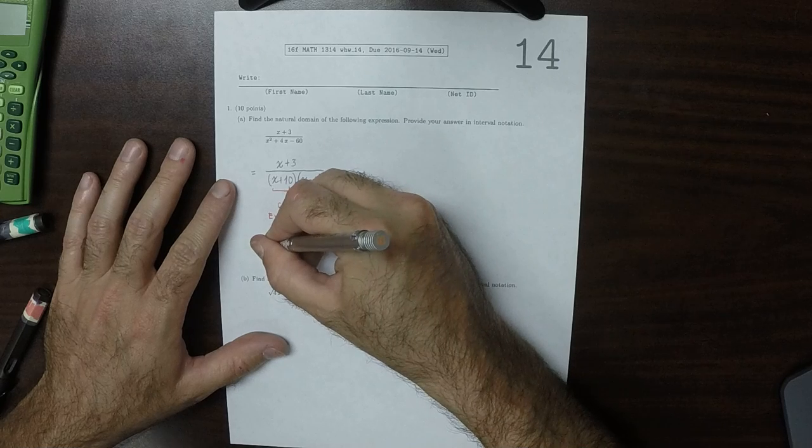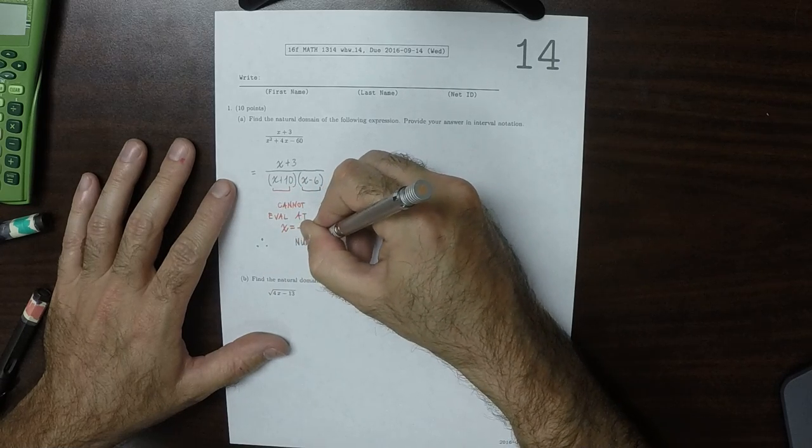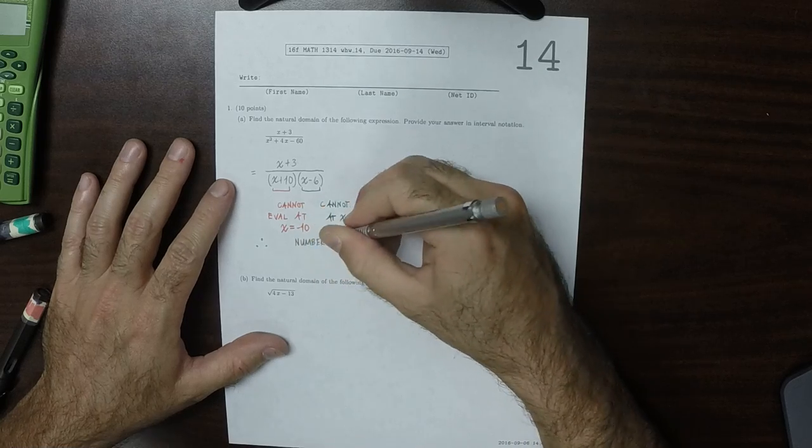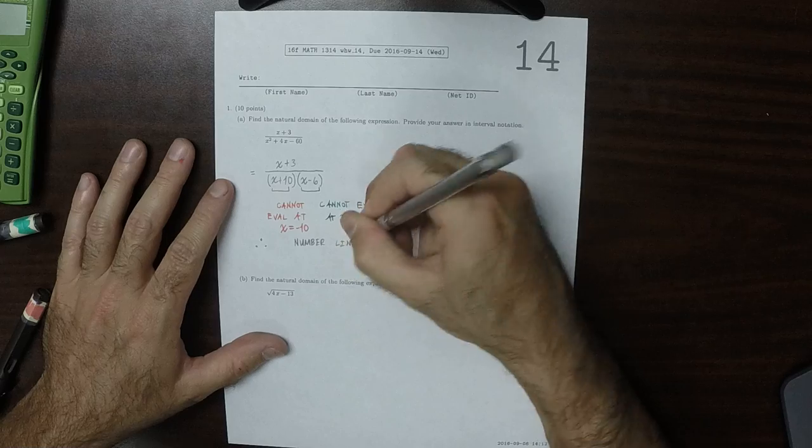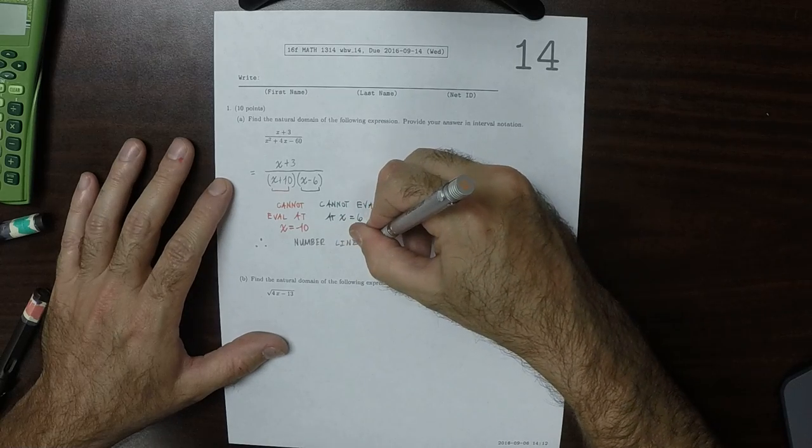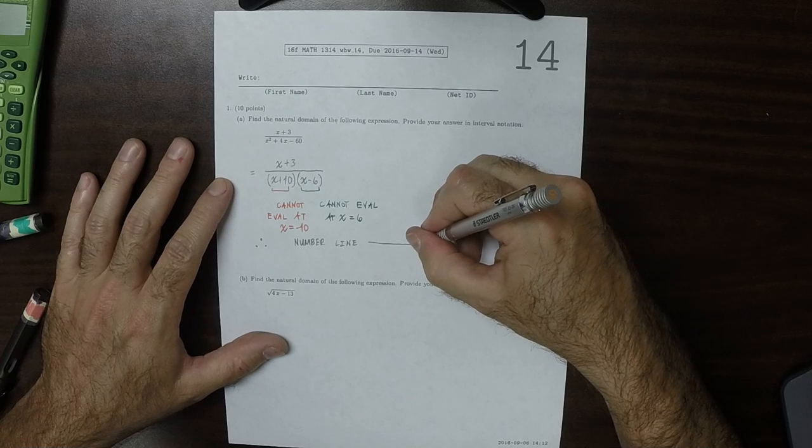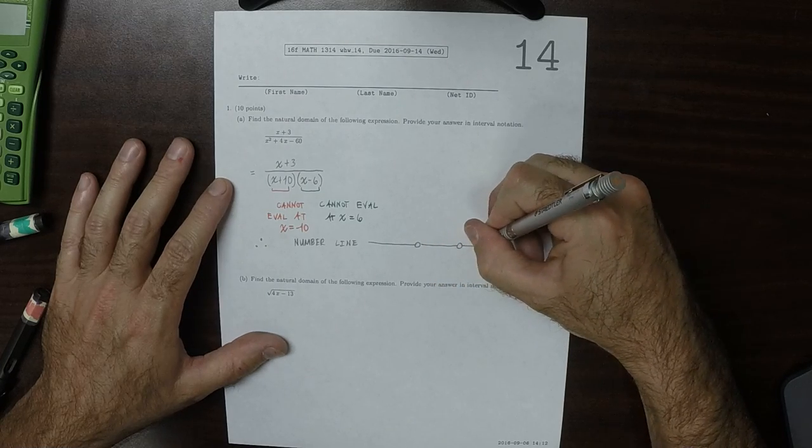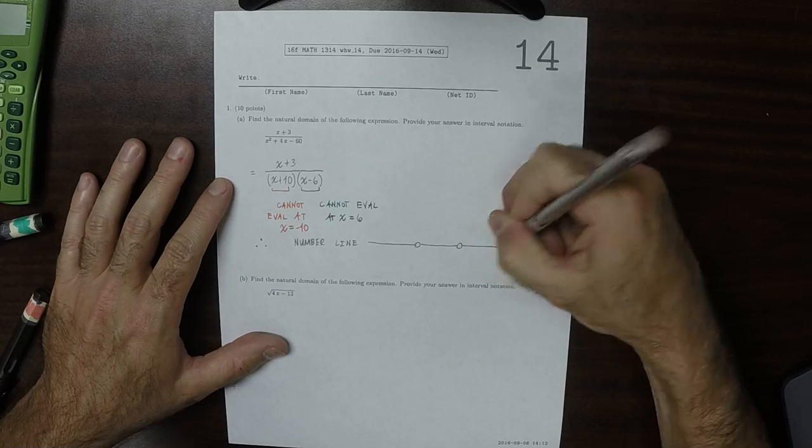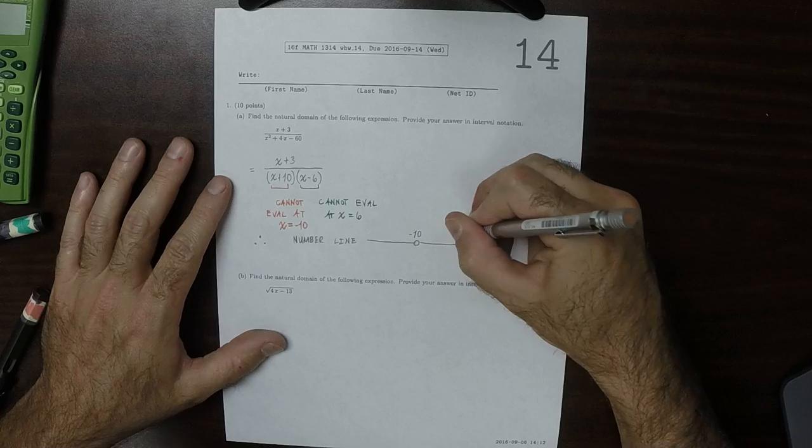Therefore, as a number line, the natural domain looks like this. So it's like the whole line, except someone deleted those two points. So the point negative 10 is deleted,